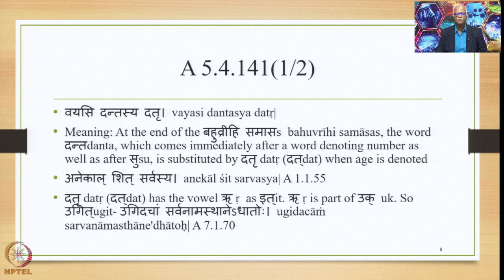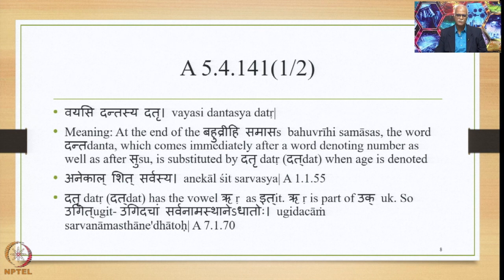The substitute Dathru is mentioned together with the vowel Roo, which is a marker or It. Roo is part of the Pratyahara Ukk, and so Dathru can be said to be a Pratyahara Ukk as It. Therefore it is Uget, and therefore the Sutra Ugedacham Sarvanama Sthane Dhatohu 7.1.70 has the scope of application in this particular substitute.